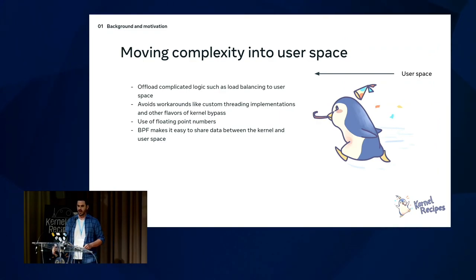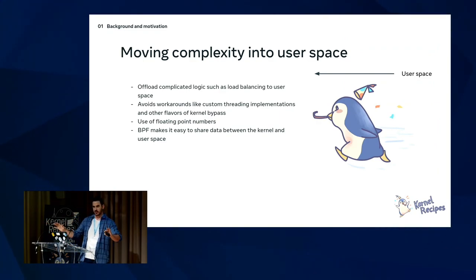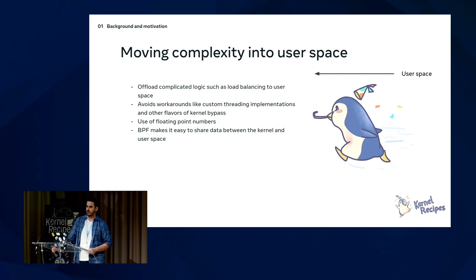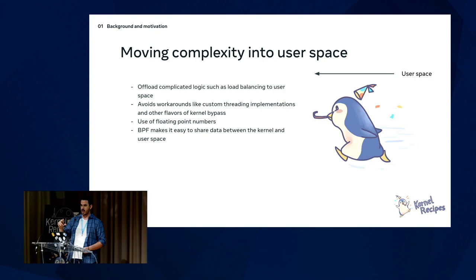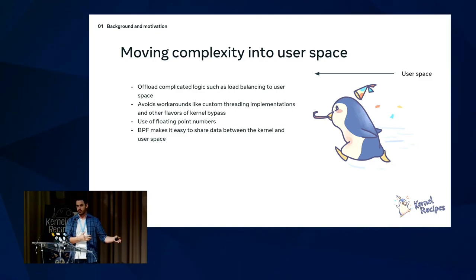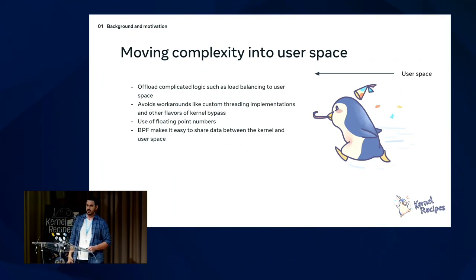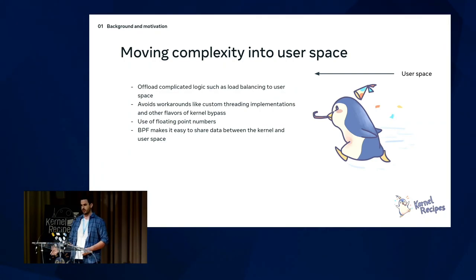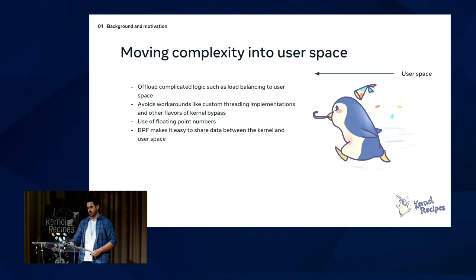You can also move complexity into user space. BPF has very ergonomic APIs that let you share mappings between kernel space and user space. You can have the complex component — the load balancer — written in user space. We actually have a scheduler written in Rust that does this. On the hot paths in the kernel, you do the quick stuff: decide who to run next. But complex stuff — using floats, using debuggers — you do in user space.